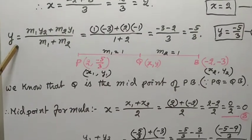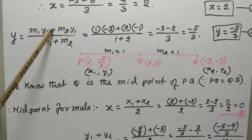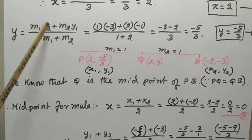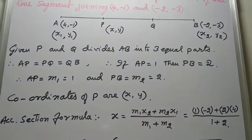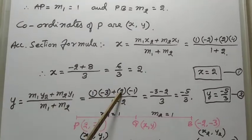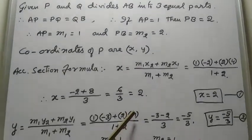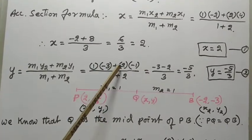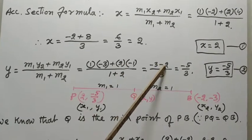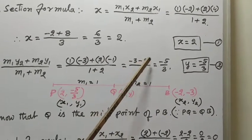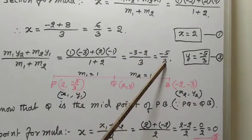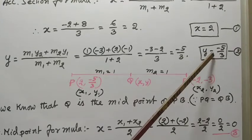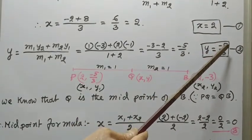Now use the Y section formula: Y equal to (M1·Y2 + M2·Y1) divided by (M1 + M2). Substitute: M1 is 1, Y2 is -3, M2 is 2, Y1 is -1, divided by 1 + 2 = 3. So: 1 into -3 gives -3, plus 2 into -1 gives -2; minus 3 minus 2 equals minus 5, divided by 3. Therefore Y equal to -5/3. So the coordinates of P are (2, -5/3).